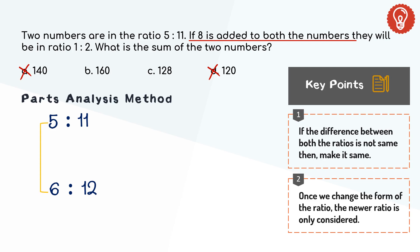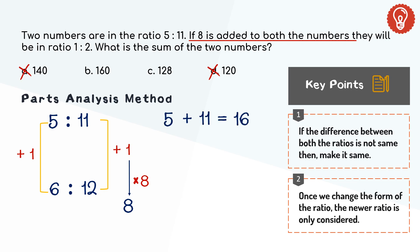Assuming the ratio itself as the original value: from 5, if we want the number to be 6, then 1 should be added. And from 11, if we want it to be 12, again 1 should be added. Hence 1 should be added to both sides of the ratio according to our assumption. But the number added is not 1 — it should be 8 according to the question. Hence increase your assumption by 8 to match the value given. The sum of the ratio is 5 and 11, which is 16 according to our assumption. Increasing the assumption by the same number 8: 16 × 8 = 128. Hence option C is the correct answer.